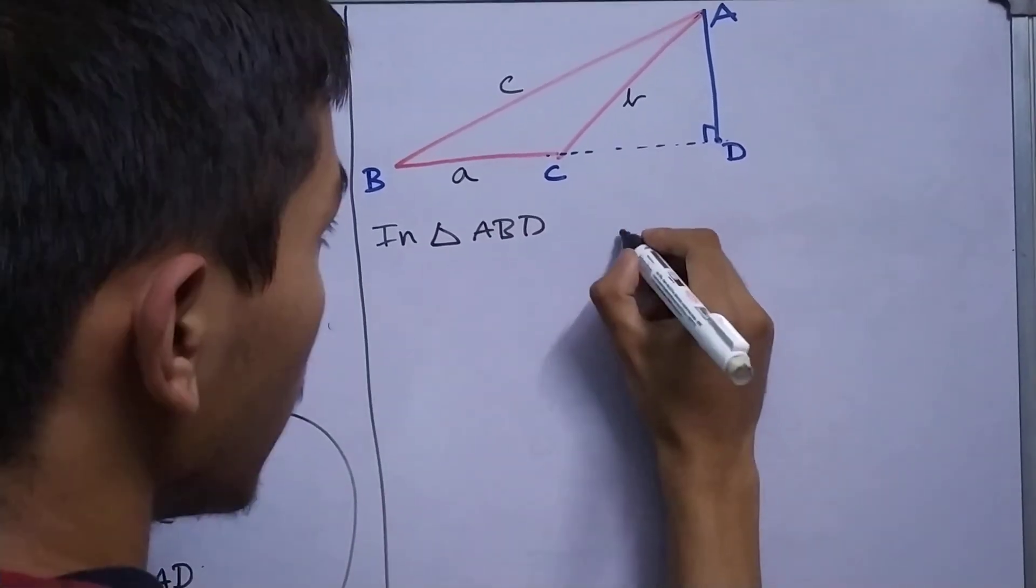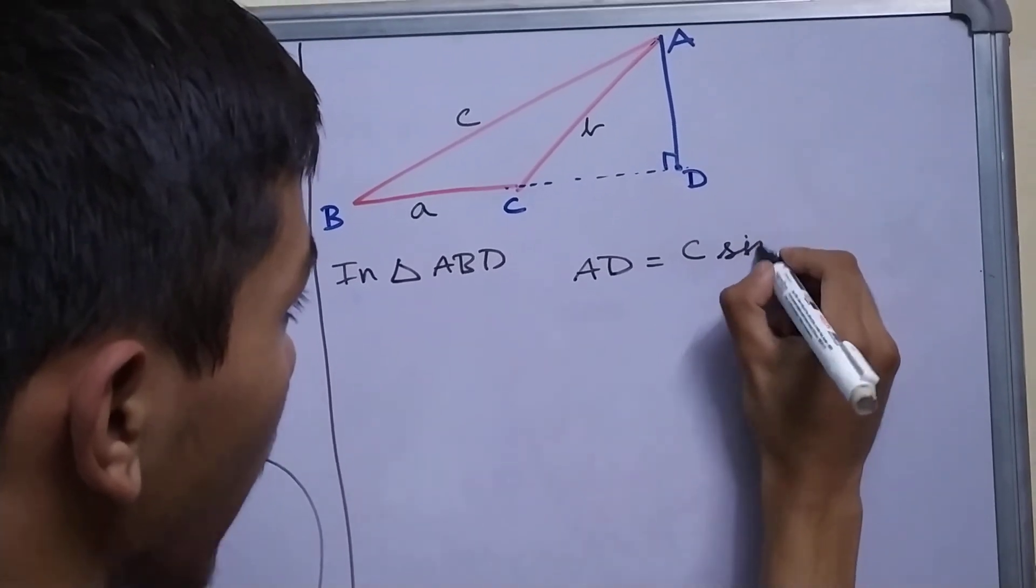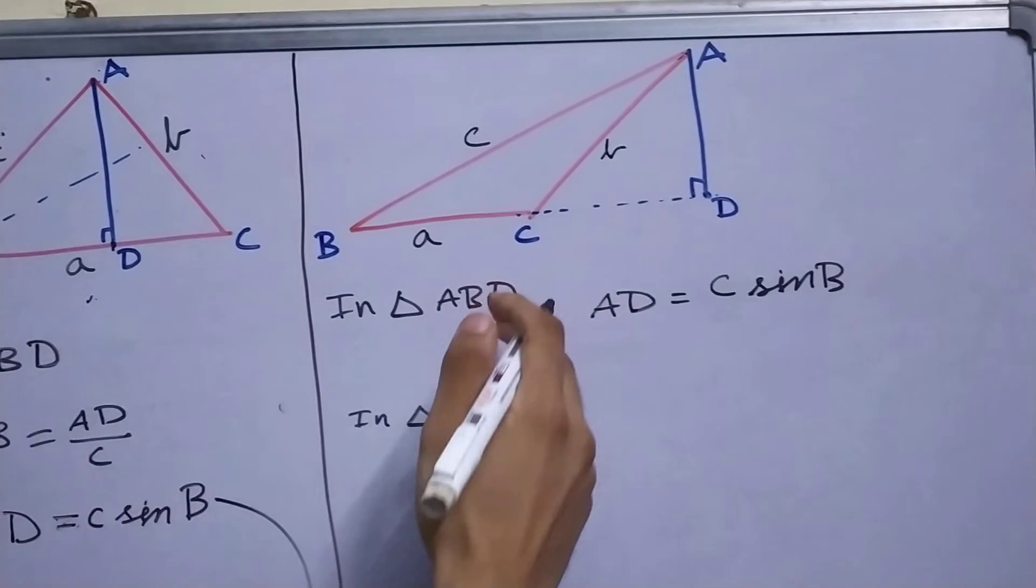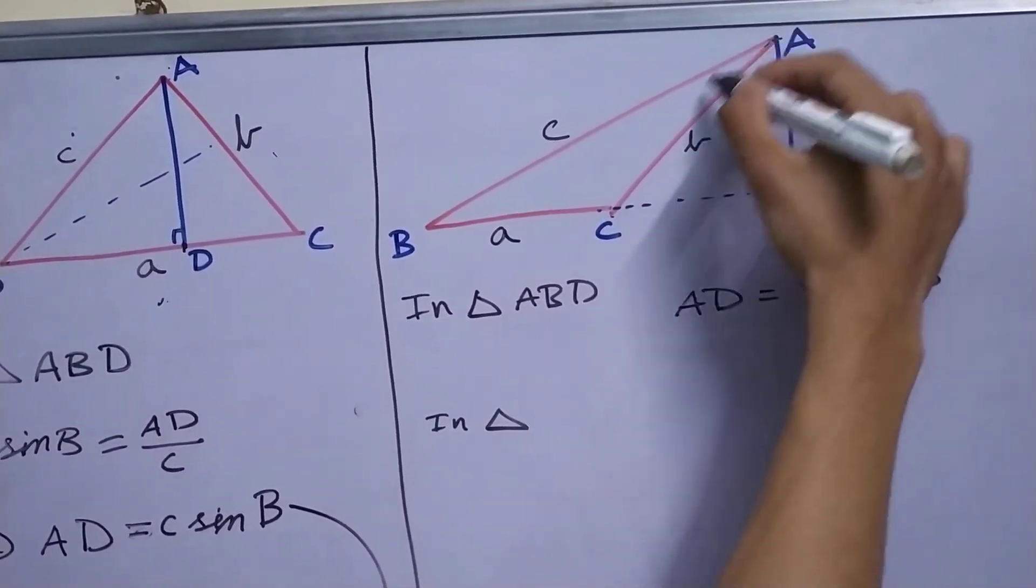We can say that in triangle ABD, AD will be equal to c sin B. And in triangle, this one, ACD.